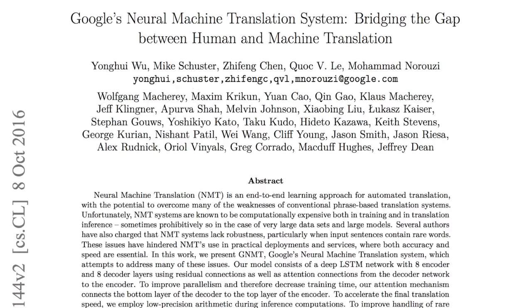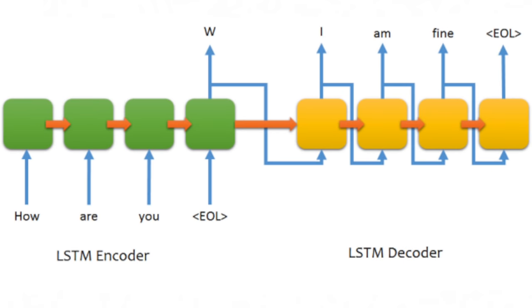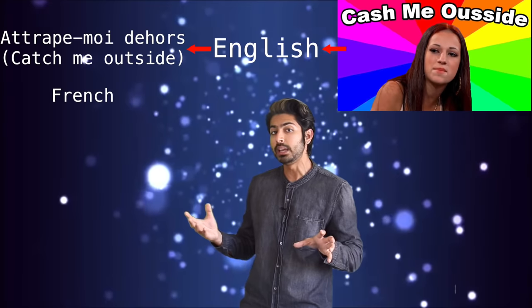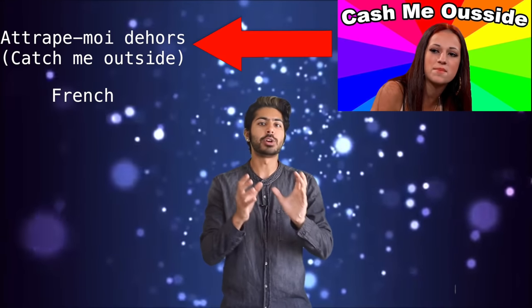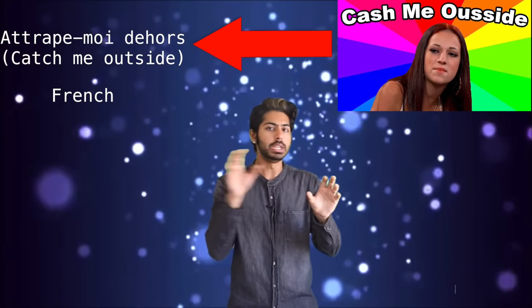Google published a paper more recently discussing a system they integrated into their translation service called Neural Machine Translation. It's an encoder-decoder model inspired by similar work from other papers on topics like text summarization. So whereas before Google Translate would translate from language A to English to language B, with this new NMT architecture, it can translate directly from one language to the other.